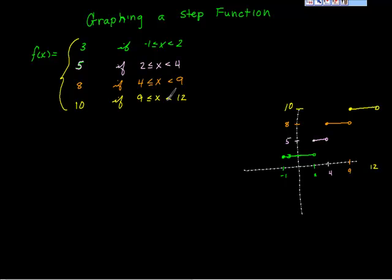I went ahead and drew the graph and color-coded it. The first interval is from negative 1 to 2, and on this interval the graph has a height of 3. Because x is greater than or equal to negative 1, the circle at negative 1 is colored in. It has to be less than 2, so the 2 doesn't count — this open circle means all the way up to 2 but not including 2. Pick any number as close to 2 as possible and it's included, but not 2 itself.